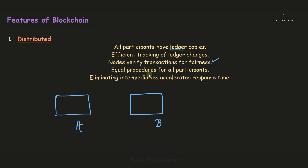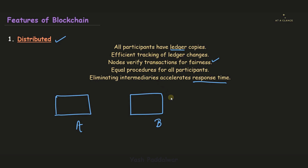Equal procedures apply for all participants — every single participant will have the same privilege, with no special treatment to any user or node. This will eliminate intermediaries and accelerate response time, with no involvement of a central authority. The distributed nature of blockchain technology makes it possible for every single node to track each and every small change in the ledger.